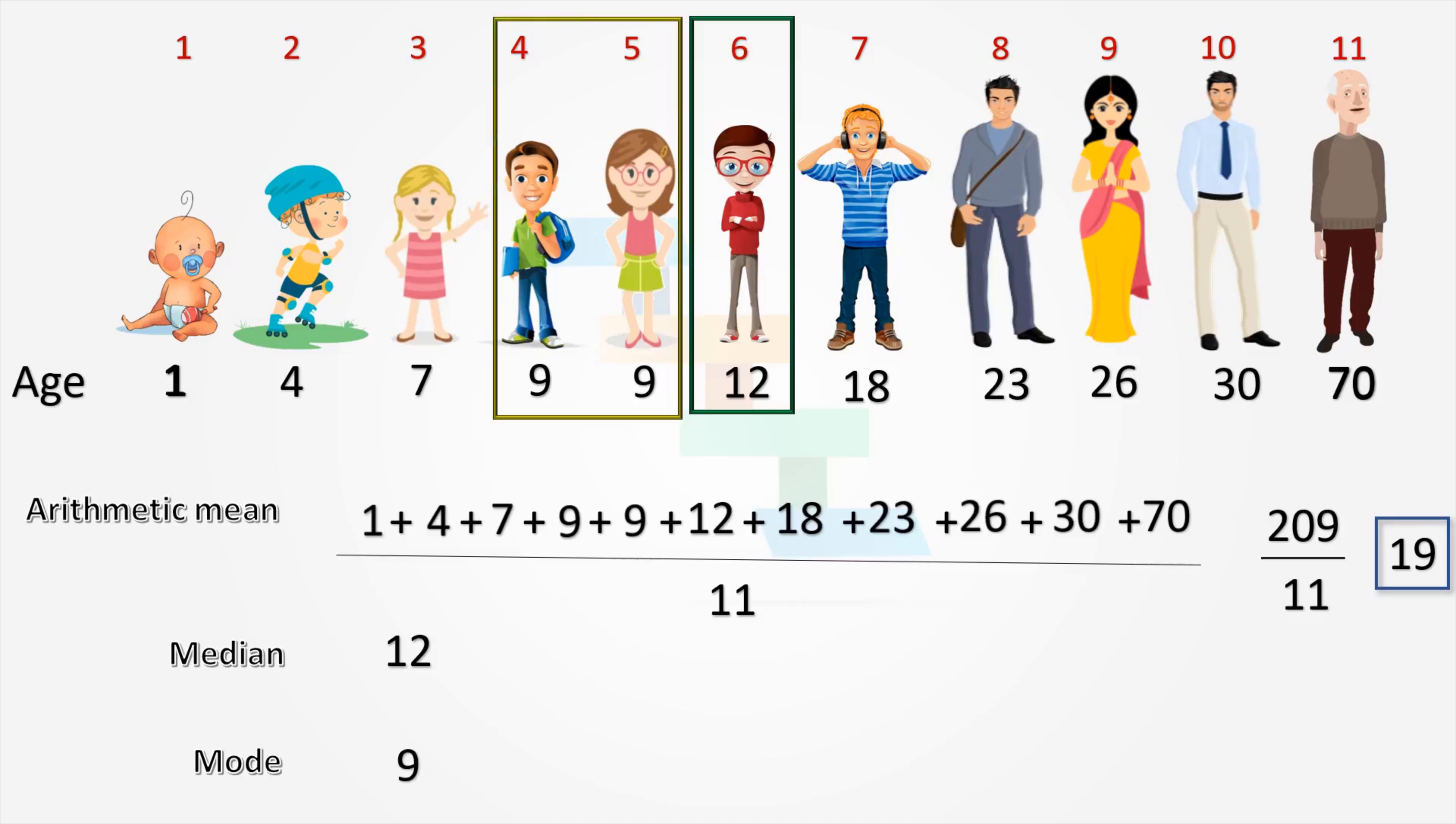Next, we will find about the range. Range is the difference between the largest data point and the smallest data point. Here, the largest data point is 70 and the smallest data point is 1, which gives the range as 69.